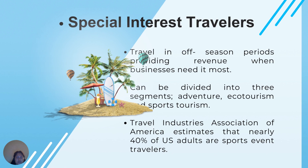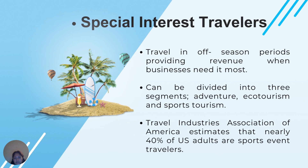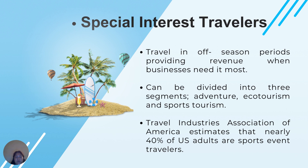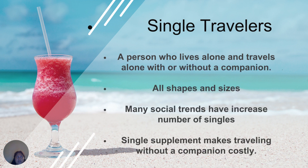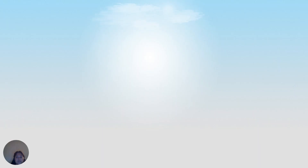We have special interest travelers who are particular about the seasons, now traveling in off-season periods, providing revenue when businesses need it most. They can be divided into three segments: those who love adventure, ecotourism, and sports tourism. The Travel Industries Association of America estimates that nearly 40% of U.S. adults are sports event travelers. We also have the single traveler — a person who lives alone and travels alone, with or without a companion. Many social trends have increased the number of singles, and they have a single supplement making their travel without a companion more costly.